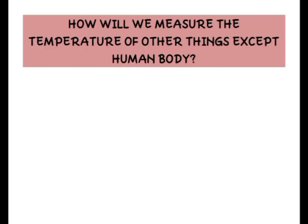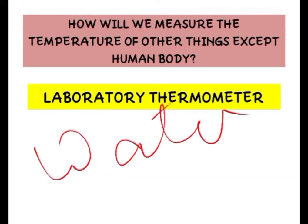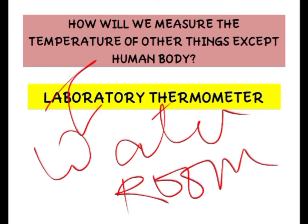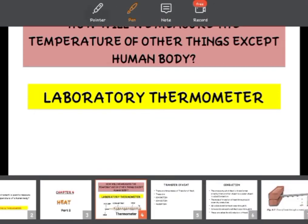In this lesson, how will we measure the temperature of things other than the human body? Human body temperature is measured by using a clinical thermometer. But for other things, there is another instrument used to measure temperature — this is known as the laboratory thermometer. It is different from the clinical thermometer. Students, don't confuse the clinical thermometer with the laboratory thermometer. The laboratory thermometer is used to measure the temperature of water, room, tea, coffee, and anything else.